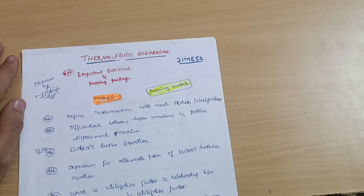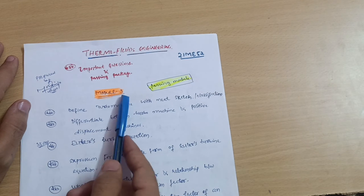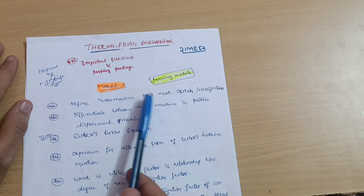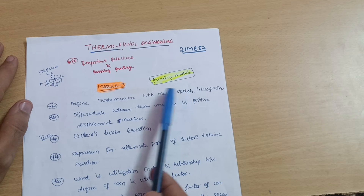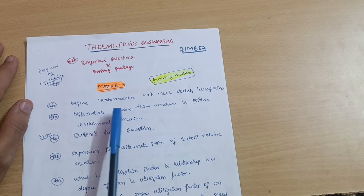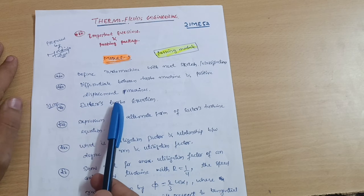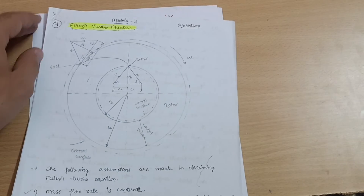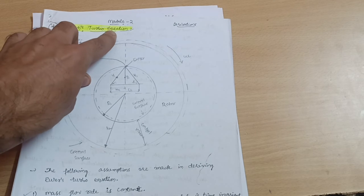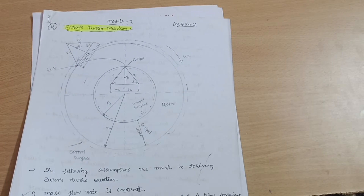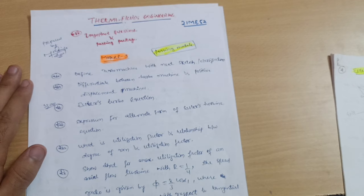Let me discuss the passing modules first, then I'll proceed with other modules for those who want to score. Module 3 is the passing module, where you have to cover theoretical questions and derivations like: define turbo machine with a neat sketch, write down the classifications of turbo machines, differentiate between turbo machines and positive displacement machines, and derive the Euler's turbo equation. Here are my handwritten notes for this model — these are the Euler's turbo equation, inlet and outlet velocity triangles, and some assumptions. This may be a 6 or 7 mark question in the examination.